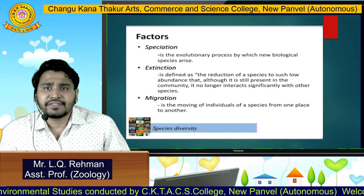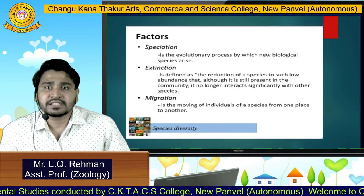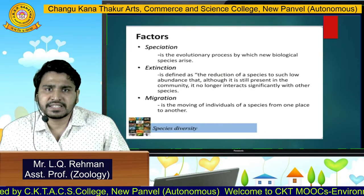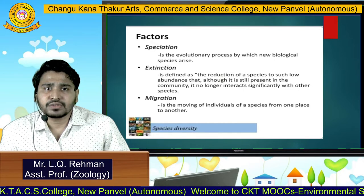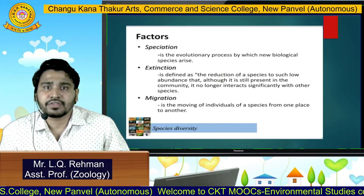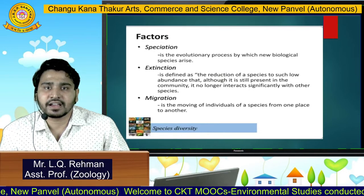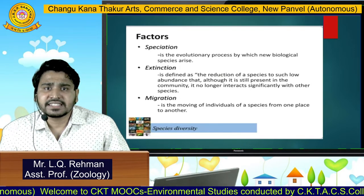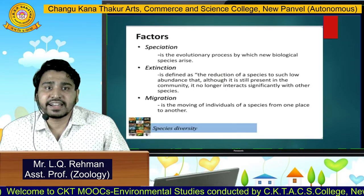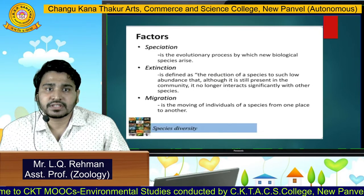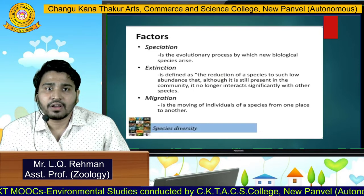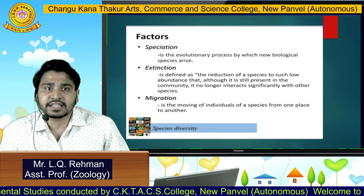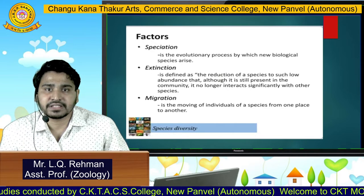What are the factors for species diversity? Number one is speciation — the evolutionary process by which new biological species arise. Next is extinction, defined as the reduction of species to such low abundance that, although it is still present in the community, it no longer interacts significantly with other species.